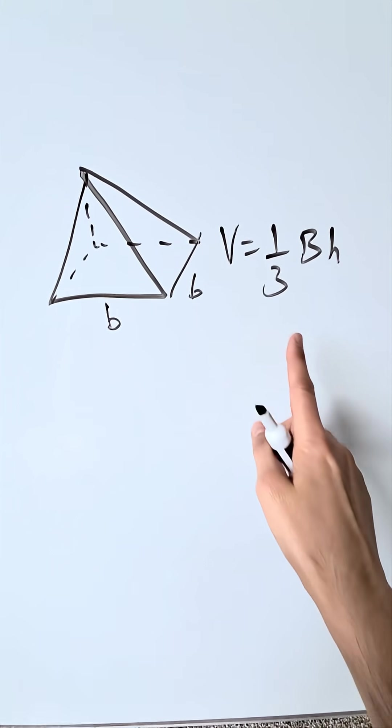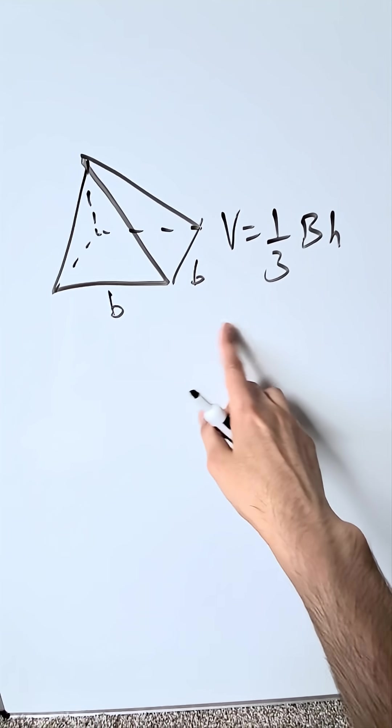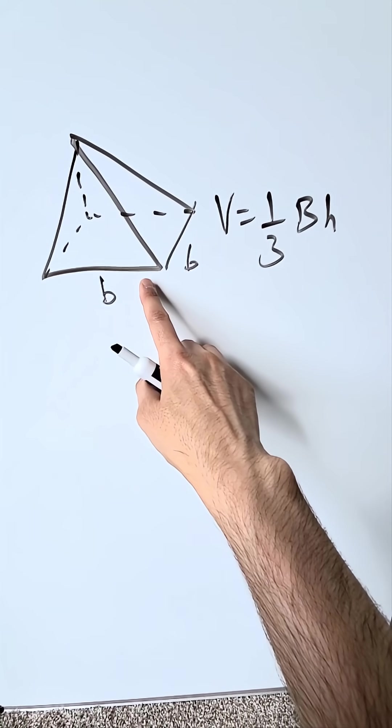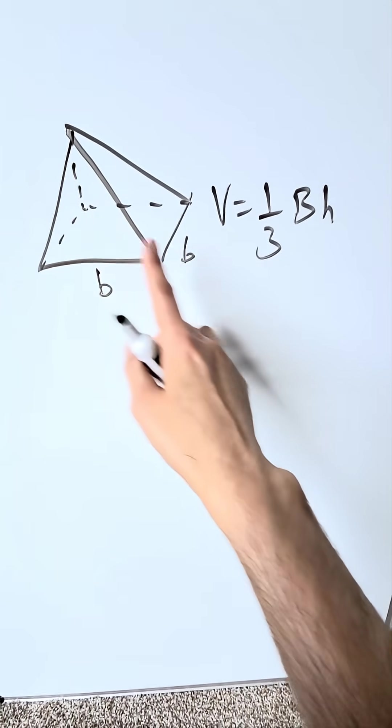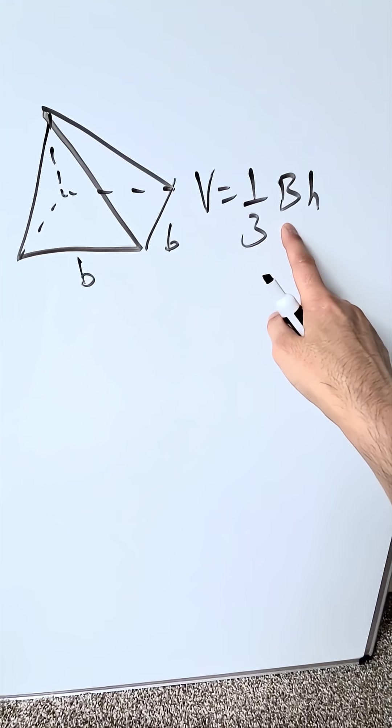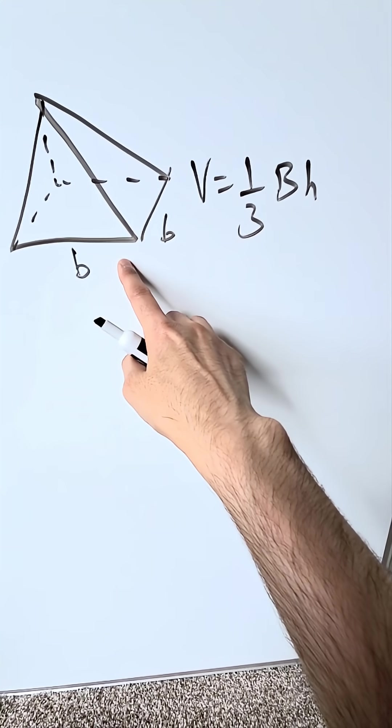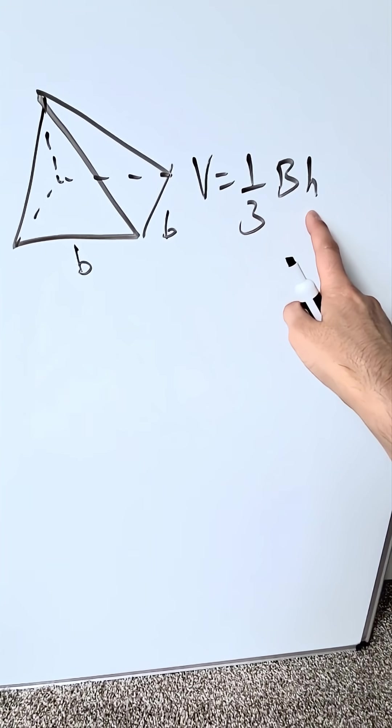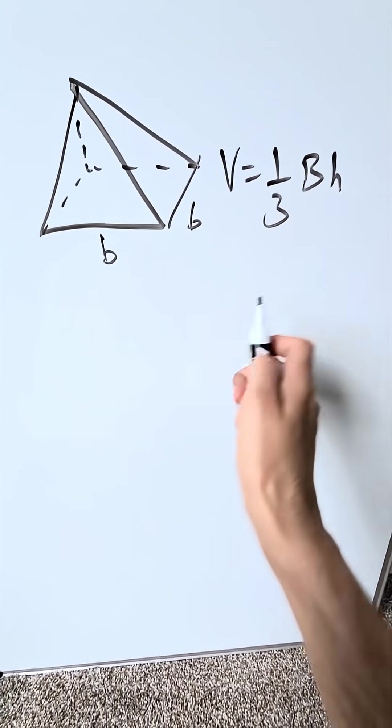Let's derive the volume formula for a square pyramid using calculus. The volume of a square pyramid where the base is a square, you have V equals one-third times capital B, which represents the area of that base of that pyramid, times the height of the pyramid. How do we derive it?